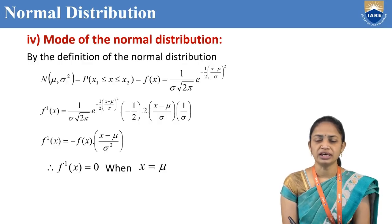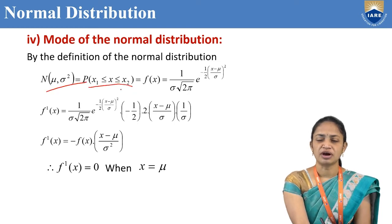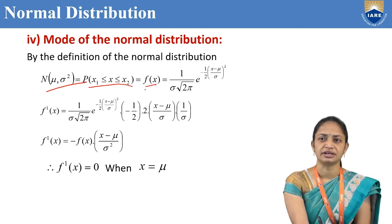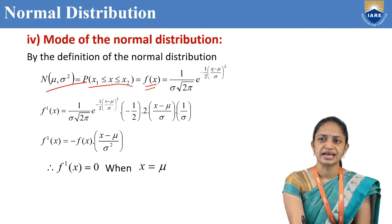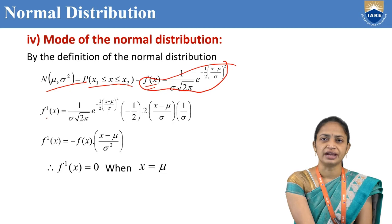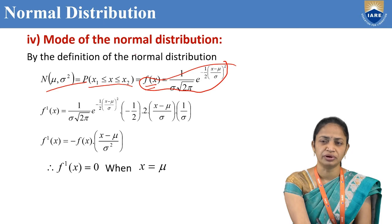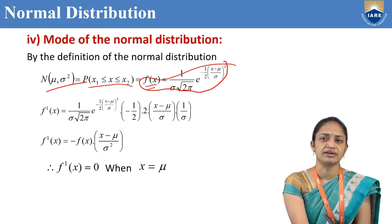Now we will discuss about mode of the normal distribution. By the definition of normal distribution, N(μ, σ²) is equal to P(x₁ ≤ x ≤ x₂). That is, F(x) = (1 / σ√(2π)) · e^(−(1/2)·((x−μ)/σ)²). Now we need to find F'(x) and F''(x), because mode is the value of x for which F(x) is maximum.